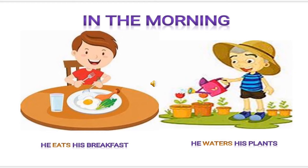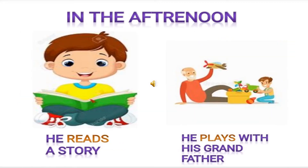Next, he waters his plants. Waters is also an action word because he is doing some action — it is also called a verb. In the afternoon, he reads a story. After that, he plays with his grandfather, so reads and plays both are verbs.